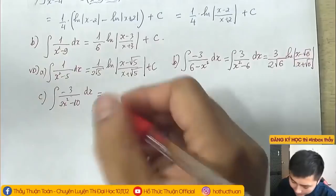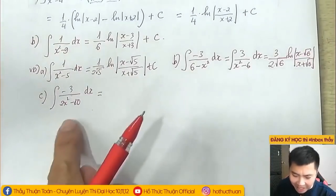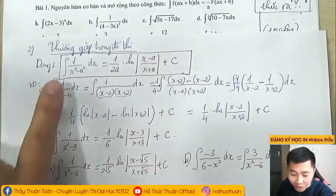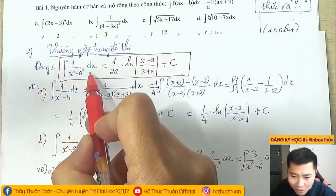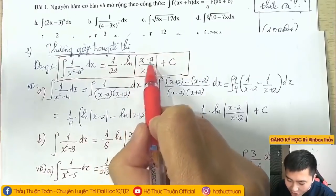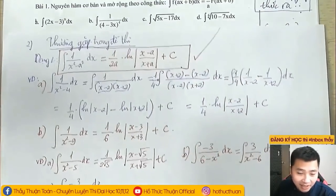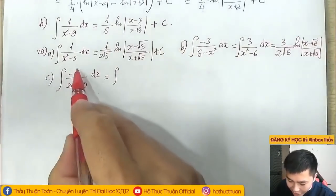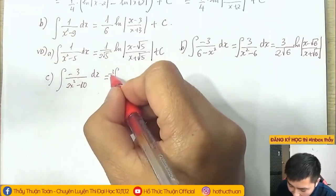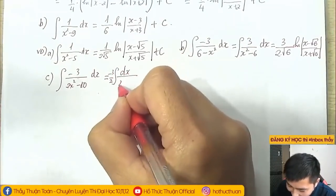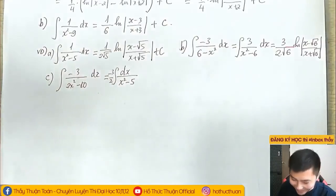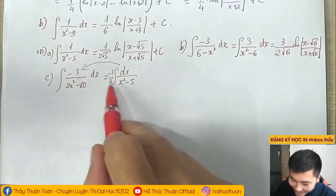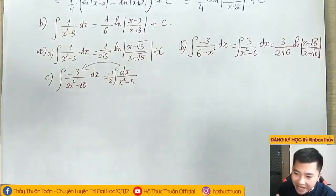Ví dụ biến tướng thứ 3: nguyên hàm của (-3)/(2x²-10) dx. Dùng được công thức nhưng nó biến tướng. Vứt -3 và 2 ra ngoài, trong ngoặc còn 1/(x²-5). Kết quả: (-3/2) nhân (1/(2√5)) nhân ln|(x-√5)/(x+√5)| cộng C. Vì x²-5 = x²-(√5)² nên A = √5.